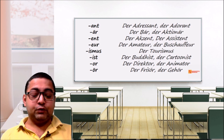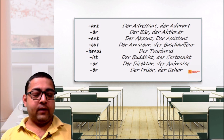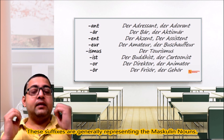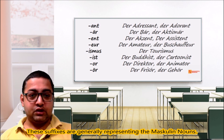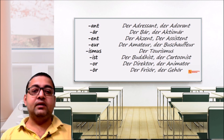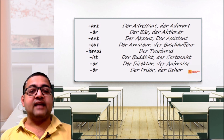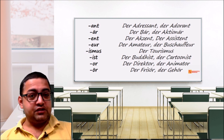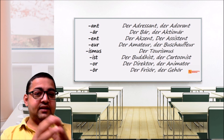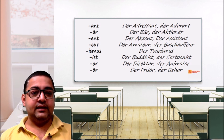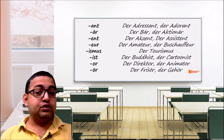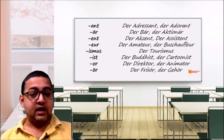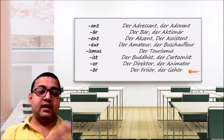Examples of masculine nouns with these suffixes include: der Adressant, der Adorant, der Bär, der Auktionär, der Assistent, der Amateur, der Busfahrer, der Chauffeur, der Tourismus, der Buddhist, der Cartoonist, der Direktor, der Animator, der Friseur.